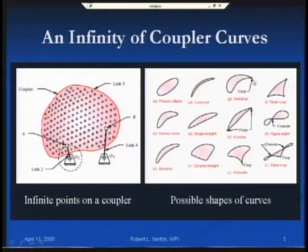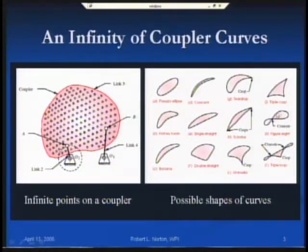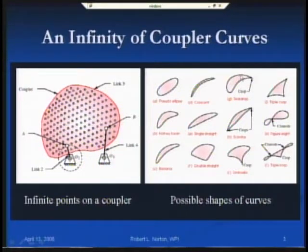Another useful feature is the cusp and its cousin the crunode — sometimes termed double points. The crunode has two slopes and two velocities depending on which direction you approach that point on the plane. The cusp is a point which has zero velocity instantaneously, so as you traverse this curve you accelerate smoothly to zero velocity and then accelerate away in a slightly different direction. This is potentially useful for stamping operations or pick-and-place where you want to pick a part off a feed chute.